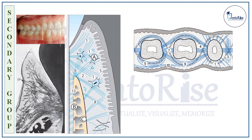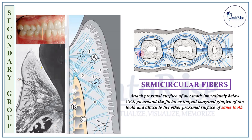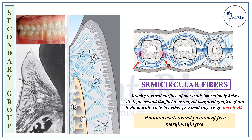The last category within the secondary group are the Semicircular fibers. You need to differentiate these from the intercircular fibers. Unlike the intercircular fibers, the semicircular fibers start from the proximal surface of one tooth, then go buccally or lingually around that same tooth, and end up on the proximal surface on the other side of that same tooth. For example, they start from the mesial surface, travel buccally and lingually around the same tooth, and end at the distal surface of that same tooth. These fibers maintain the contour and position of the free marginal gingiva. Please observe the figures carefully, as they help differentiate between the different fiber types and clarify attachments.